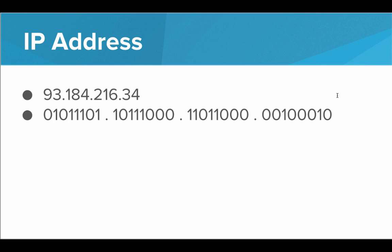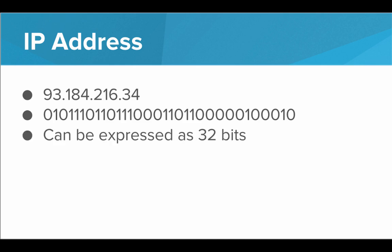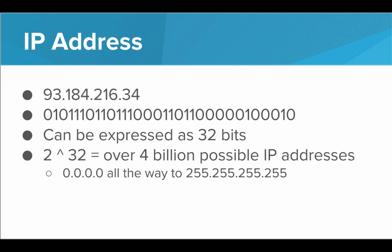Another important thing to note about IP addresses is that each one of these numbers is represented using 8 bits, which means that the entire IP address is easily expressible as a single binary number that has 32 bits. No matter the IP address, it is guaranteed to be a 32-bit address — 8 bits, or 1 byte, per number. That also means we have 2 to the 8, or 256, possible numbers for each place in the IP address. Each number can take on any value between 0 and 255. Since we have 32 bits to work with, this means we have 2 to the 32, or over 4 billion, possible IP addresses — from 0.0.0.0 all the way up to 255.255.255.255.